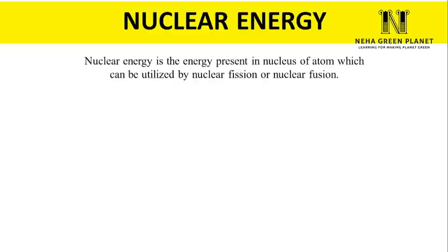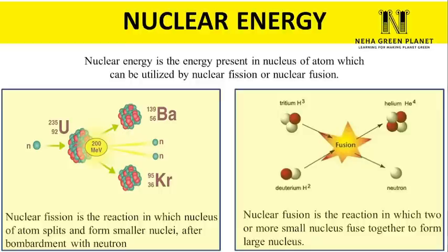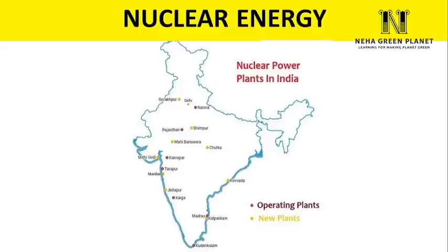Nuclear energy is present in the nucleus of atoms and can be utilized through nuclear fission or nuclear fusion. Nuclear fission splits a heavy atom like uranium into smaller nuclei such as barium and krypton by bombarding it with a neutron. Nuclear fusion joins two or more small nuclei — for example, hydrogen atoms fusing to form helium — releasing large amounts of energy. In a nuclear power plant, uranium rods are placed between control rods to manage the energy generated. India has nuclear power projects at Narora, Jaitapur, Tarapur, Kakrapar, and Kudankulam, among others.